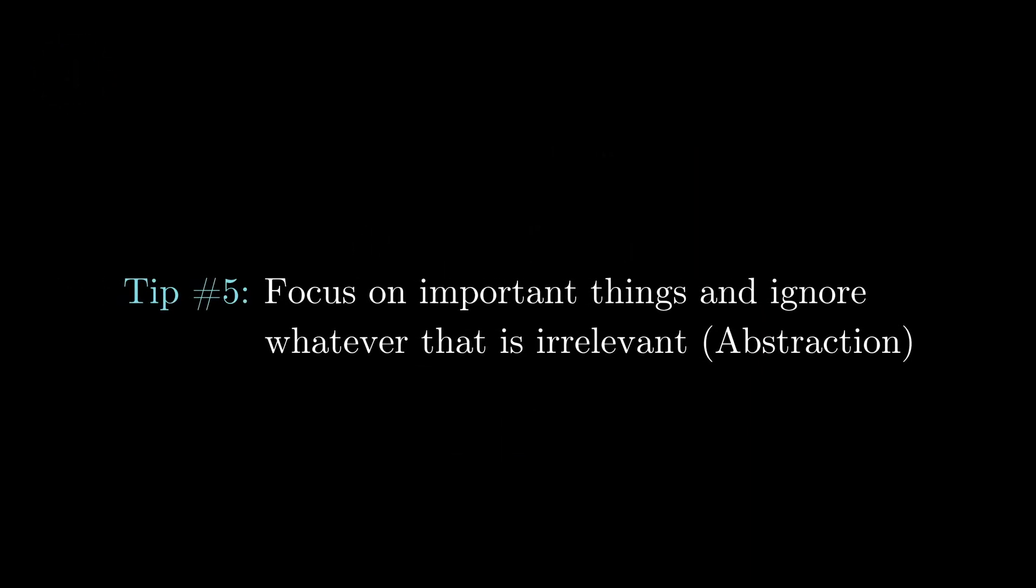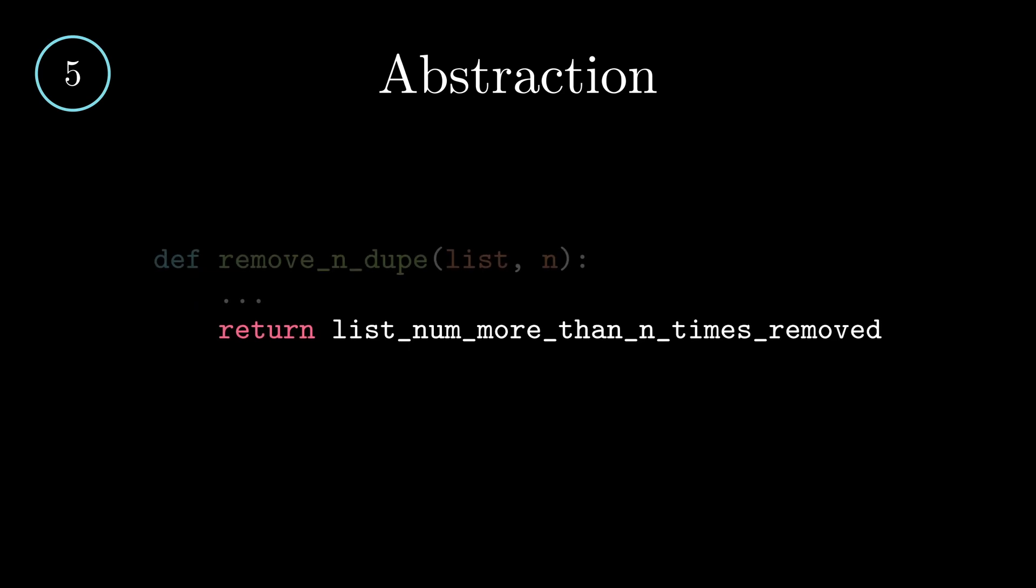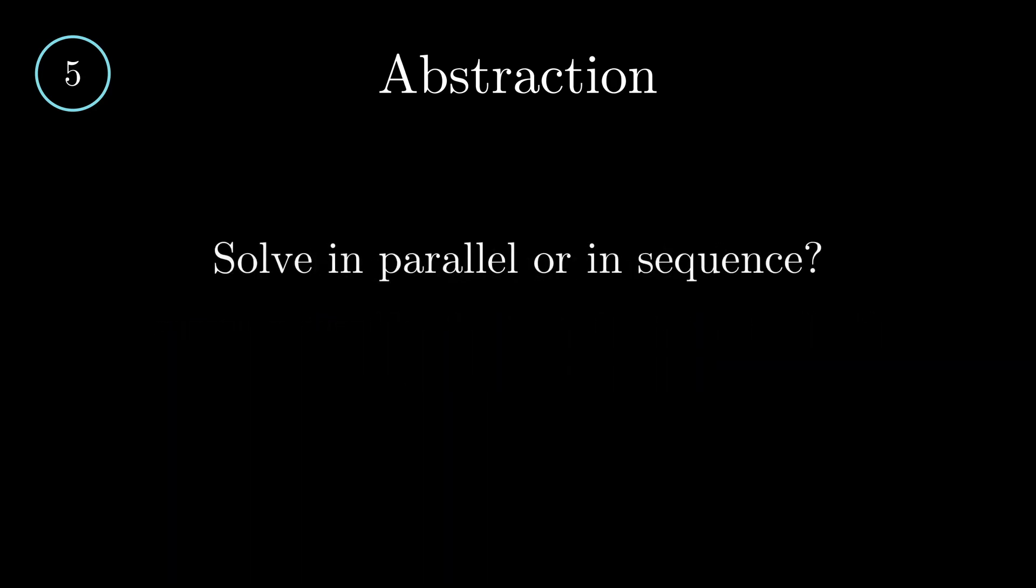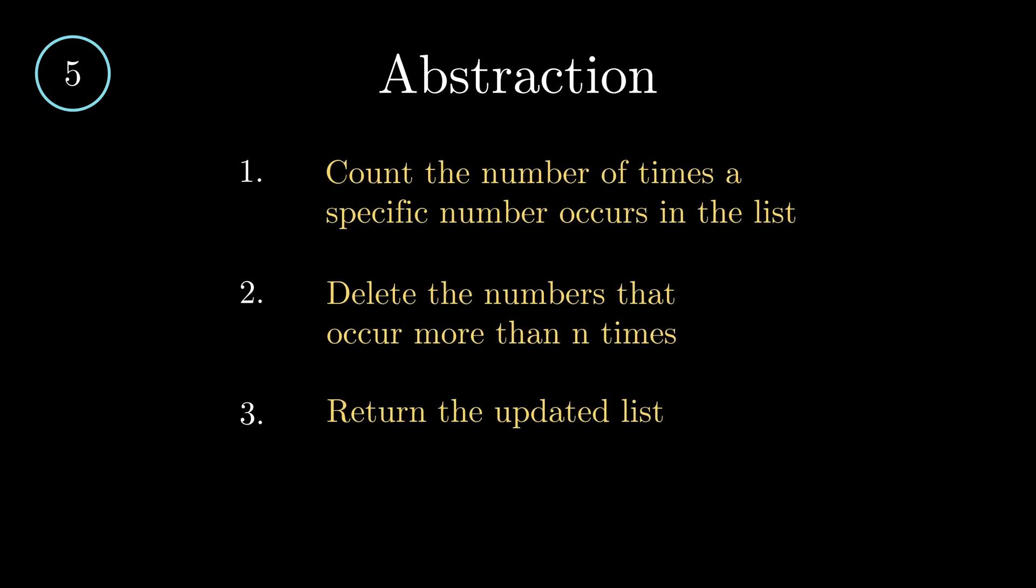Tip number 5: Focus on the important things and ignore whatever is irrelevant. In this case, our focus is on the list we want to return. Since we are processing and modifying the list passed into our function, we need to ask ourselves some questions. Is there a preservation of order? Yes, the elements in the list must be kept in the same order. Can the problem be solved in parallel or must it be done sequentially? Well, let's bring back the three objectives. It seems like each part must be done in order as each objective can only be fulfilled when the previous one is complete.